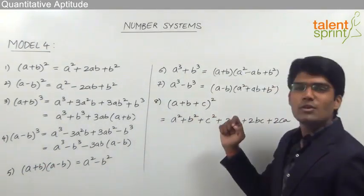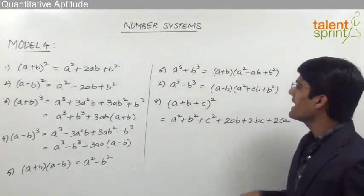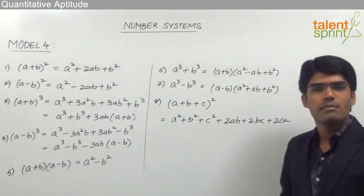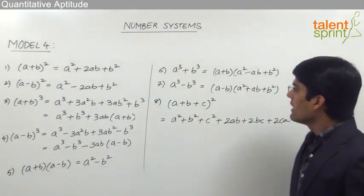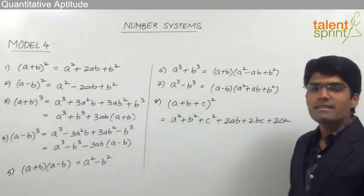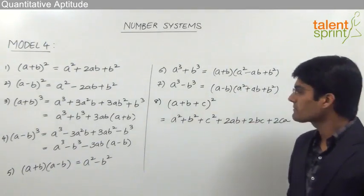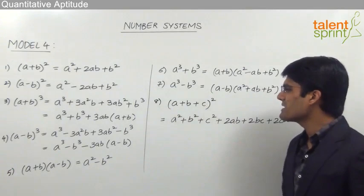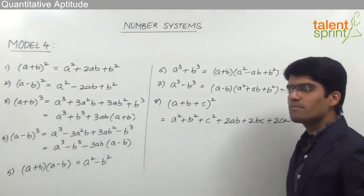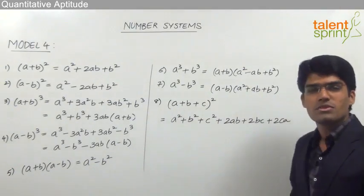Next, a³ + b³ can be factored as (a + b)(a² - ab + b²), and a³ - b³ can be factored as (a - b)(a² + ab + b²). The last formula is (a + b + c)² = a² + b² + c² + 2ab + 2bc + 2ca.